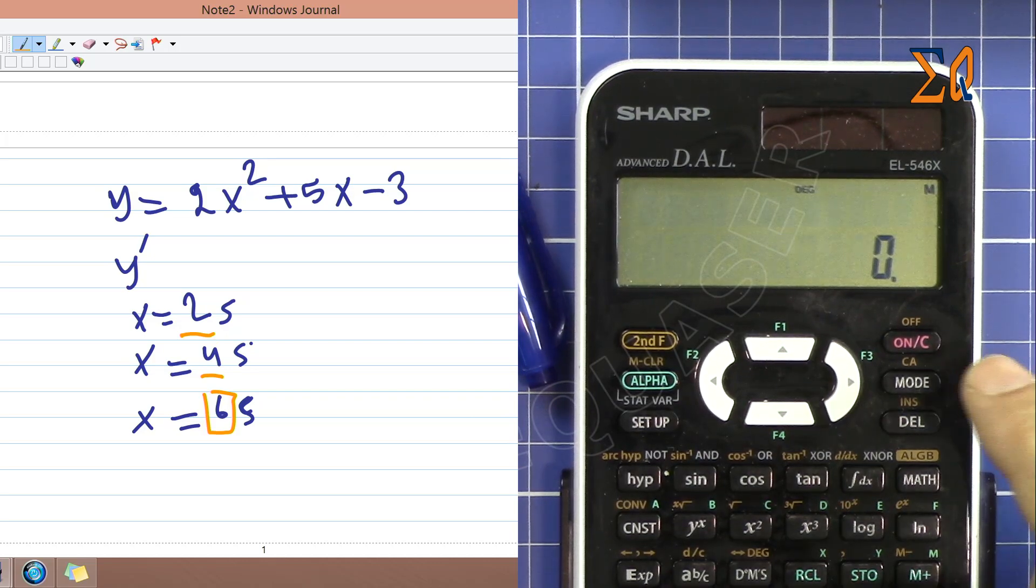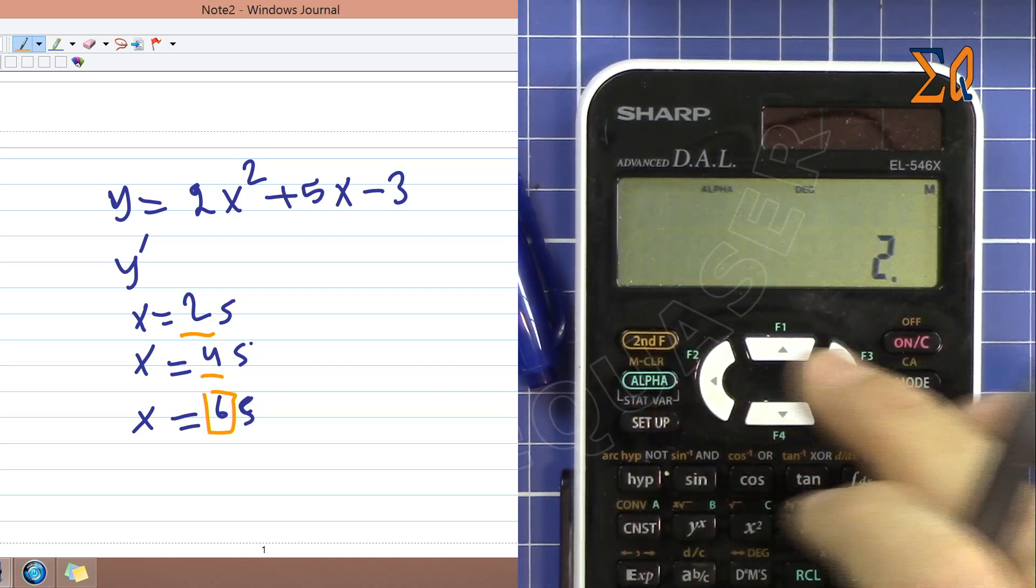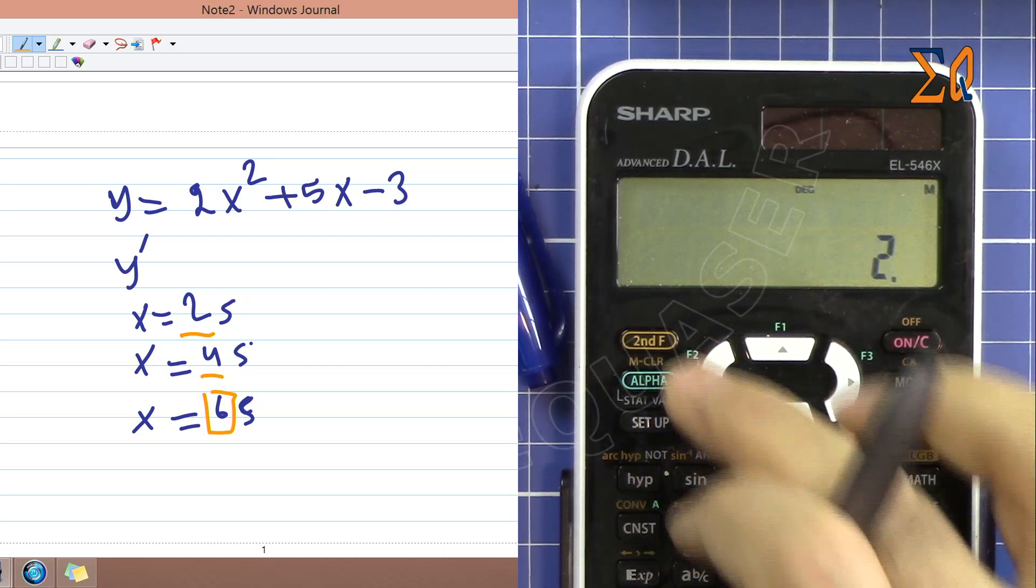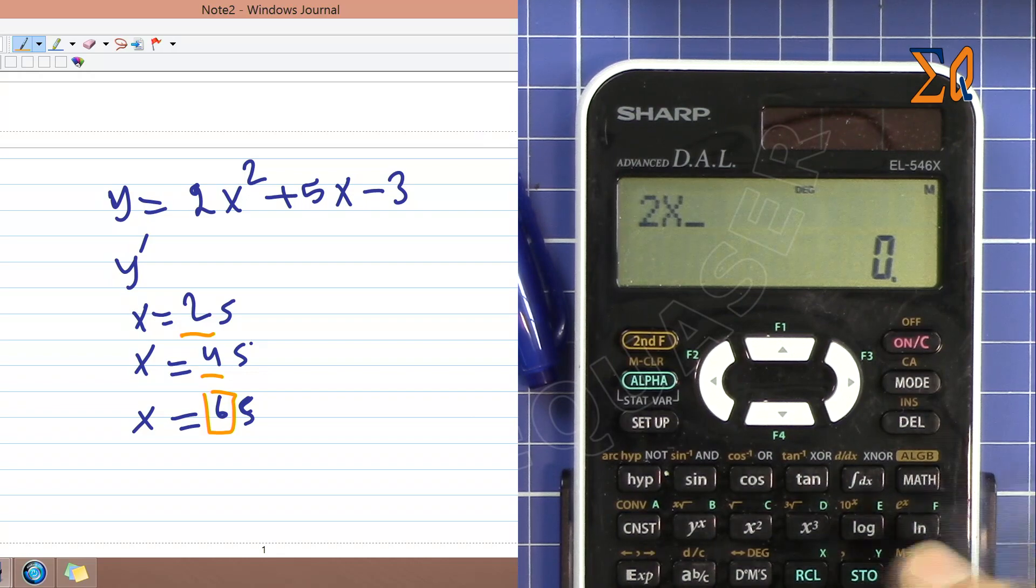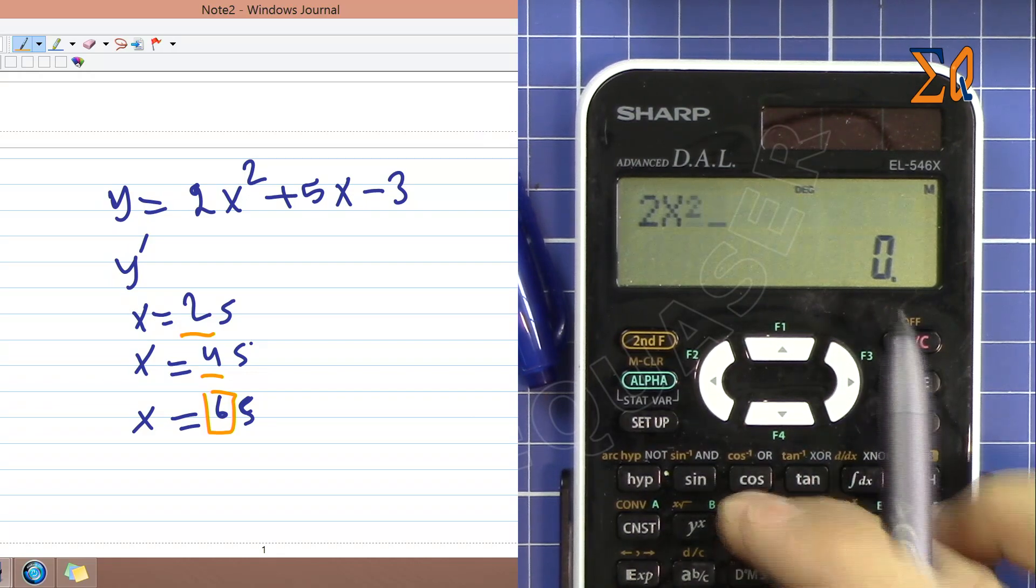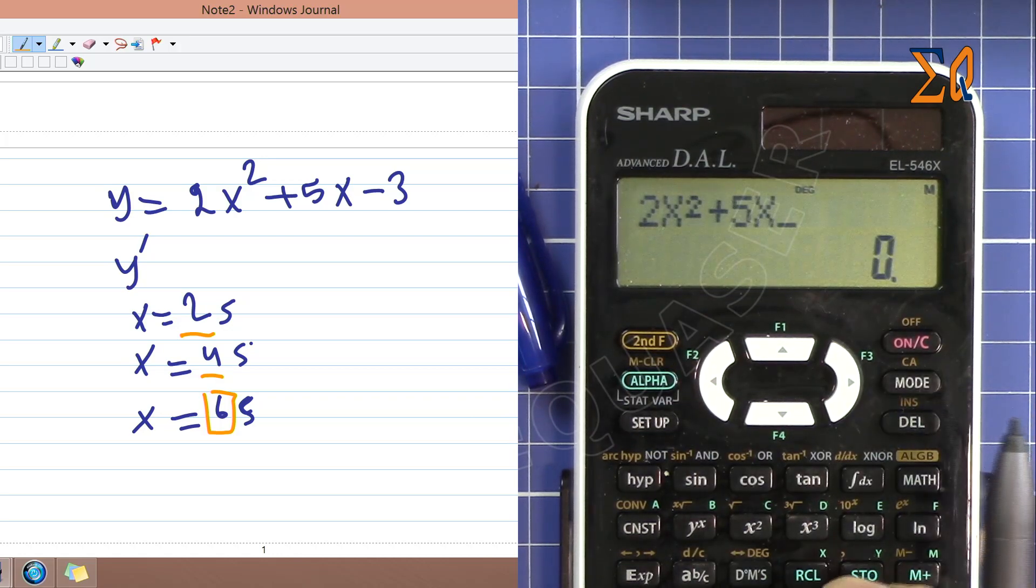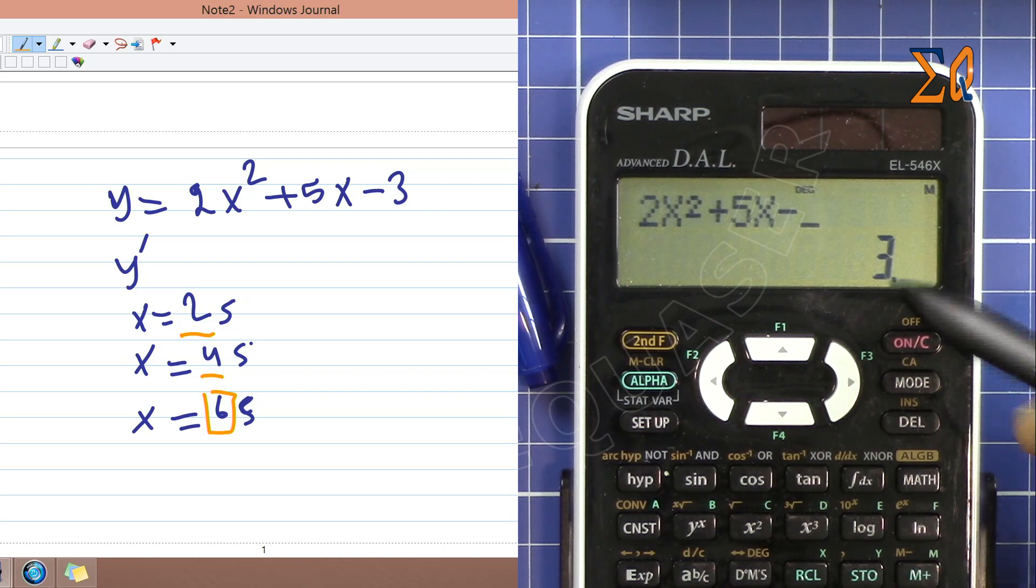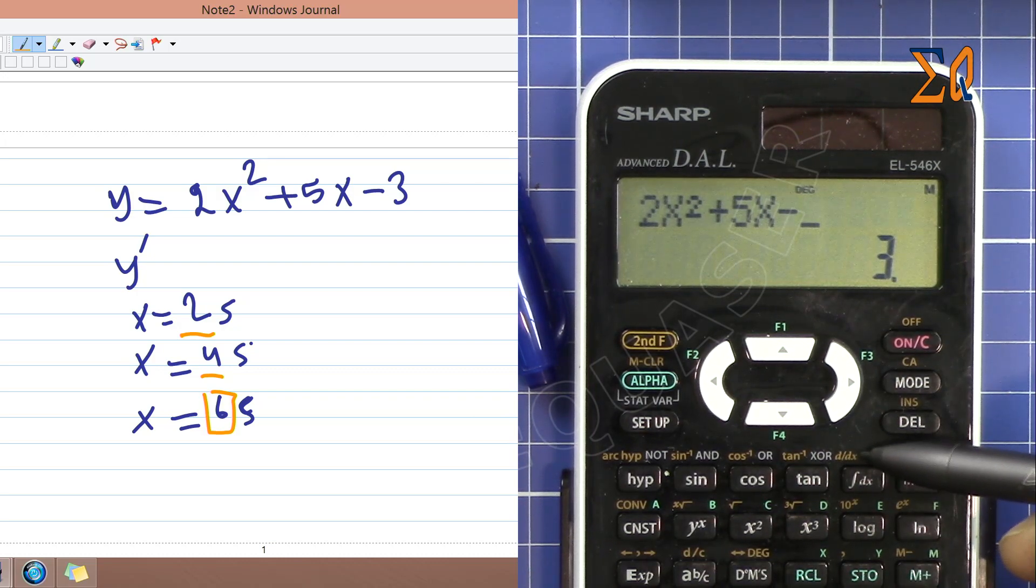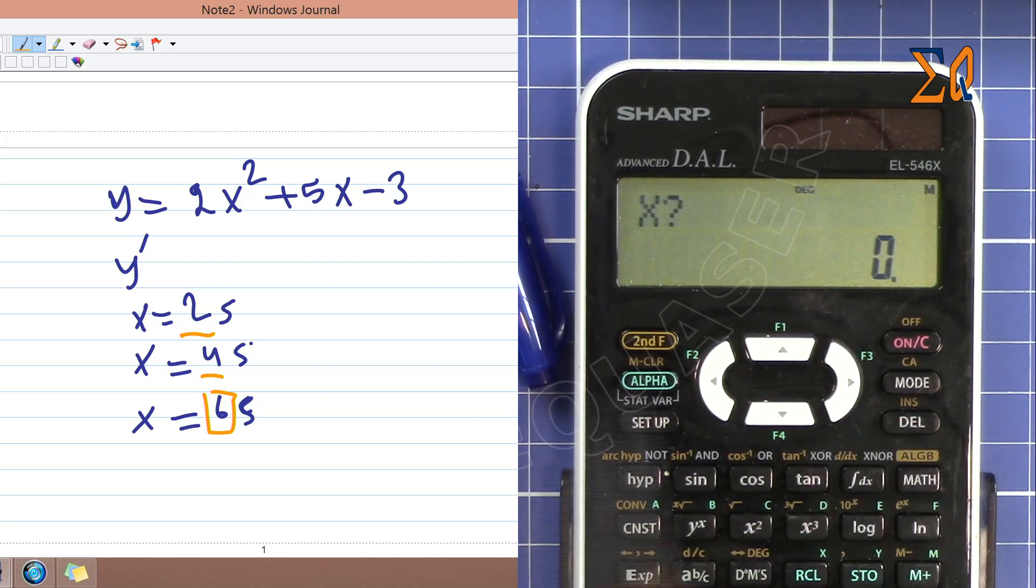Let's get started. First, let's enter the equation. I'm entering 2, then press alpha, and then X. You see here X. Y to alpha X to the squared, plus 5, and then alpha and RCL which is X minus 3. Once you're done with this—here minus 3—we initiate the derivative. Here, D over DX. Second function D over DX, and it asks for the X value.